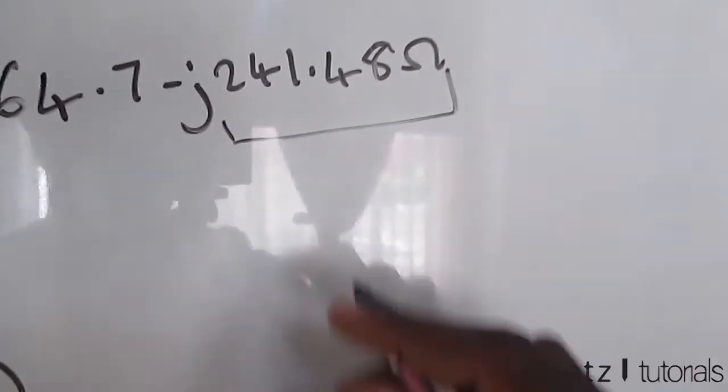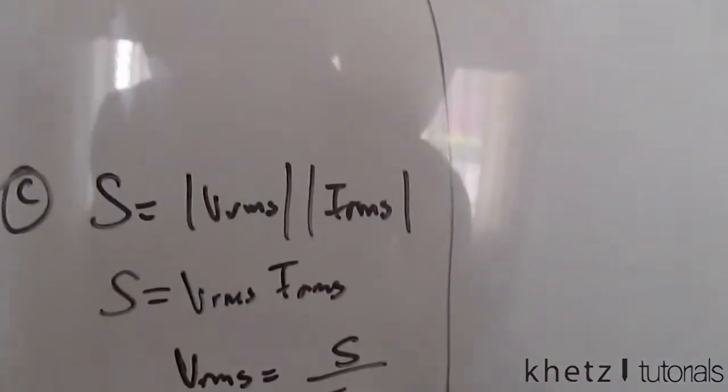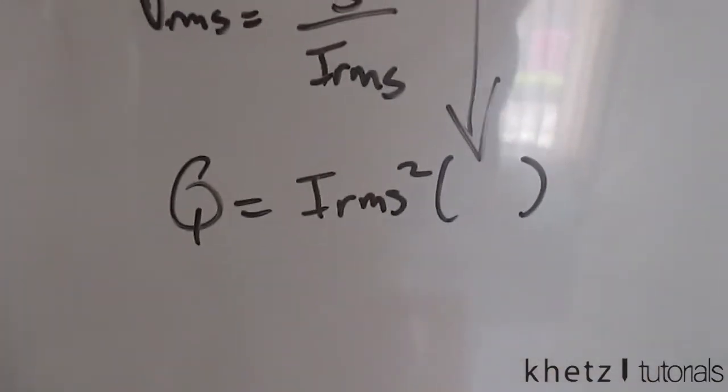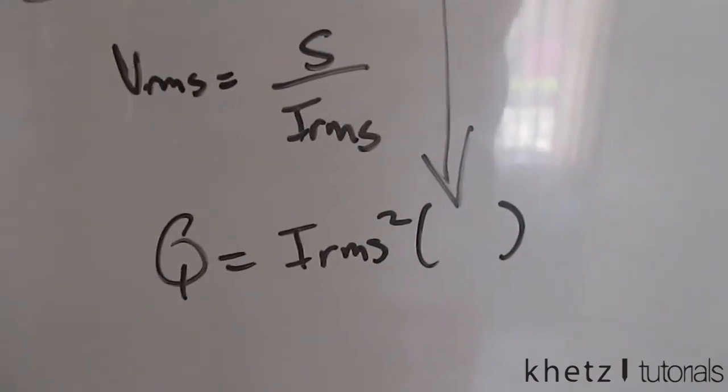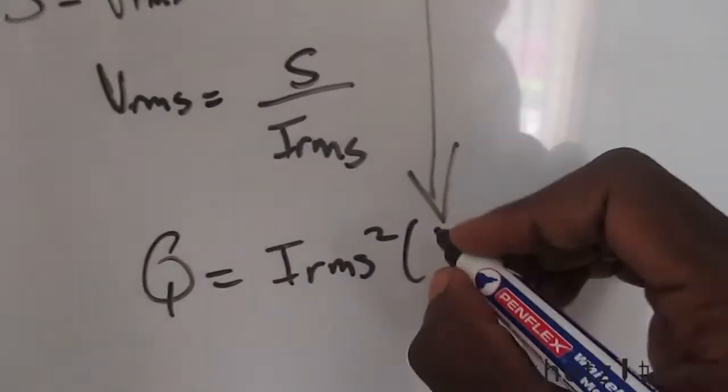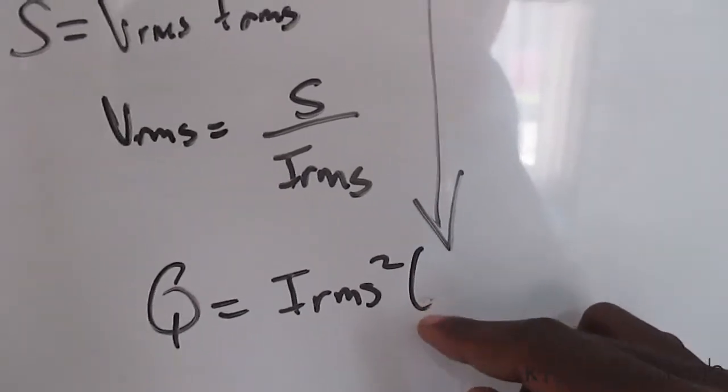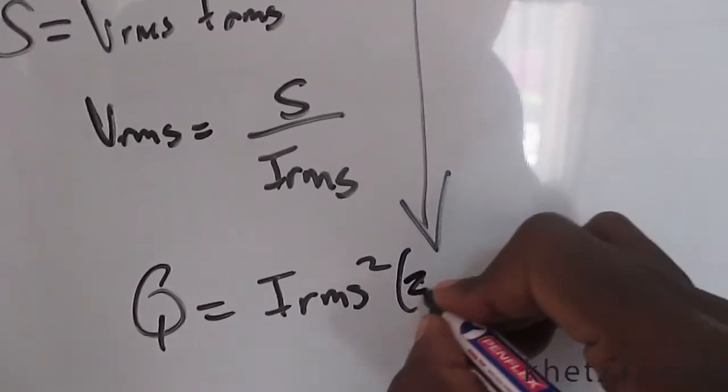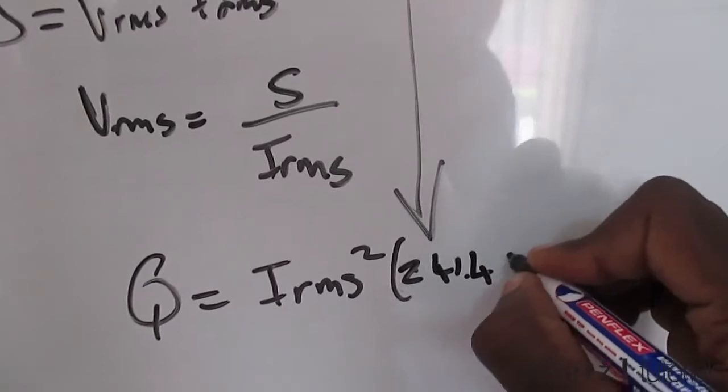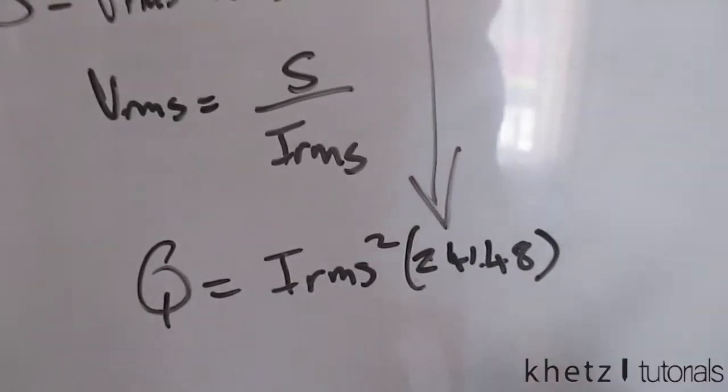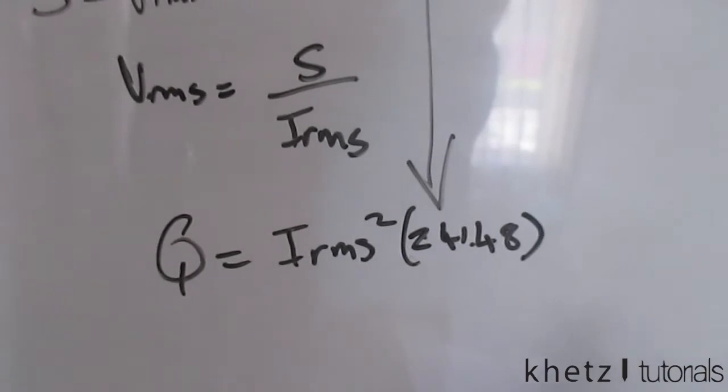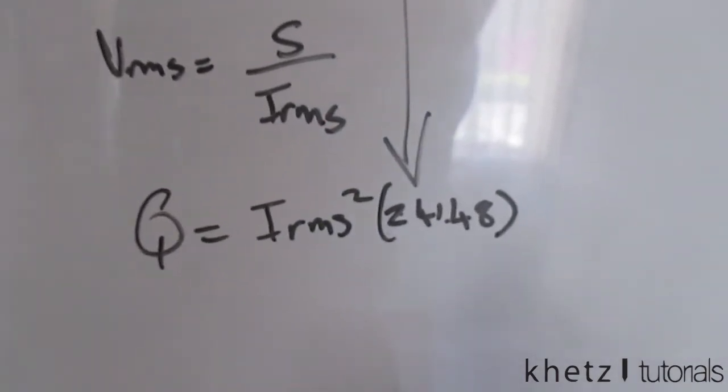Now taking this imaginary part and substituting it into this formula, you're going to find your reactive power. In here we're going to substitute the value, so we're going to substitute 241.48. You can take that negative value or as it is, doesn't really matter, but in the end we want a positive value for the amplitude.